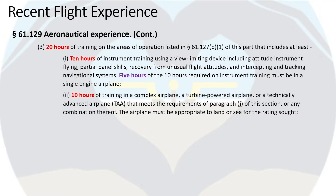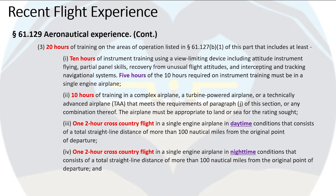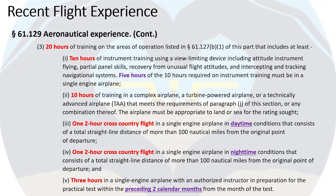You'll also need 10 hours of training in a complex airplane, a turbine-powered airplane, or a technically advanced airplane (TAA) that meets the requirements of paragraph (j) of this section, or any combination thereof. So you don't need all 10 hours in a complex airplane or all 10 in a TAA — it's any combination of the three. You must also perform one two-hour cross-country flight in a single-engine airplane in daytime conditions with a total straight-line distance of more than 100 nautical miles from the original point of departure, and similarly one two-hour cross-country flight in nighttime conditions of more than 100 nautical miles. You must also conduct three hours in a single-engine airplane with an authorized instructor in preparation for the practical test within the preceding two calendar months from the month of the test.